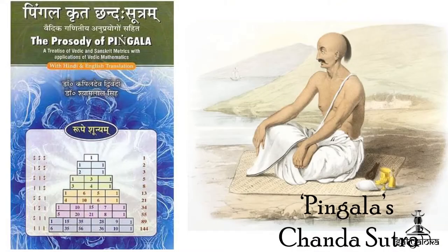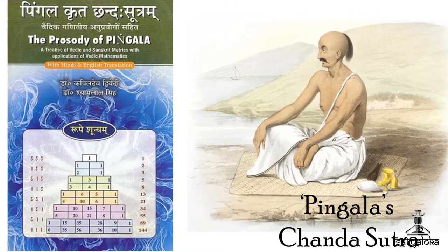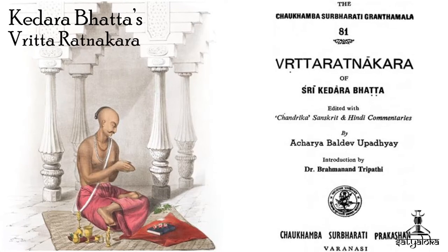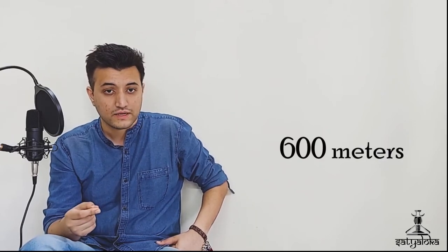Sanskrit Prasadi or Chandas refer to one of the six Vedangas, or the limbs of Vedic studies. It is the study of poetic meters and verse in Sanskrit. The ancient manuals on Chandas include Pingala's Chanda Sutra, while an example of a medieval Sanskrit Prasadi is Kedar Bhatta's Vruttaratnakara. The most exhaustive compilations of Sanskrit Prasadi describe over 600 meters, a substantially large repertoire than any other metrical tradition.